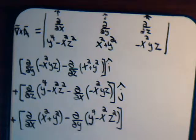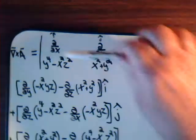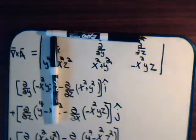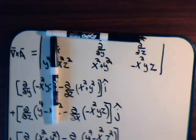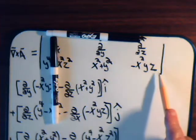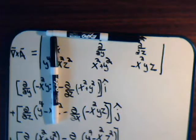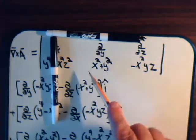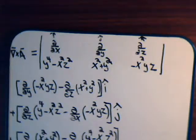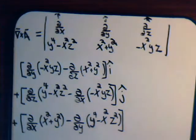The way the expansion works is: for the i-th component, we cover up the first row and first column to get a 2×2 determinant. When we do the cross products here, it sets us up for taking partial derivatives because we're dealing with the del operator. So the i-th component involves taking the partial of one expression with respect to y, minus the partial of another expression with respect to z — and that is the i-th component written out here. The same process applies for the j and k components.